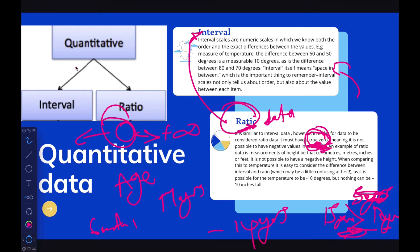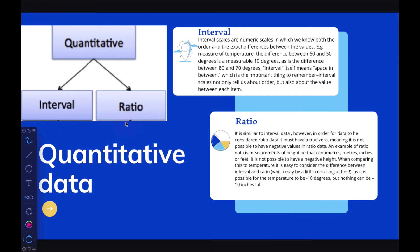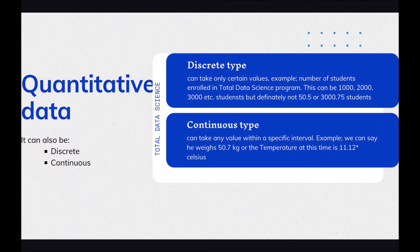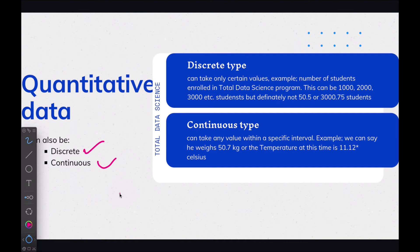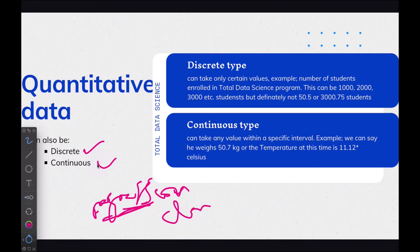So the two types of quantitative data are interval and ratio. In the next slide, we'll also look at two important concepts: discrete and continuous. These are very important when discussing regression in machine learning. If you're predicting on continuous data like stock market price, that's a continuous variable.